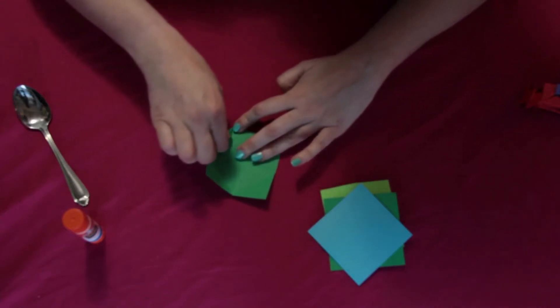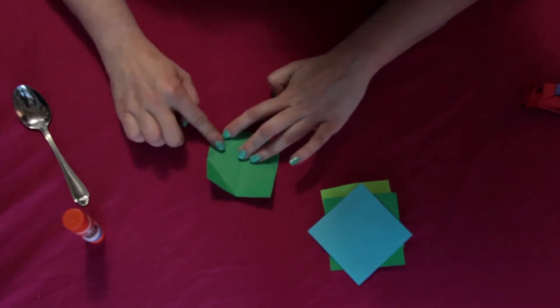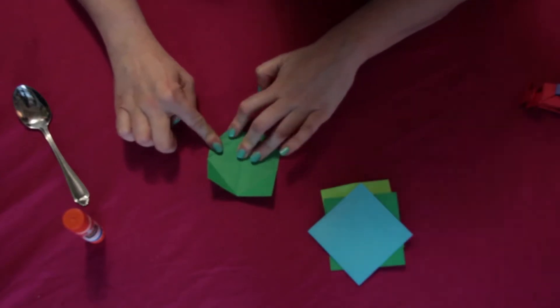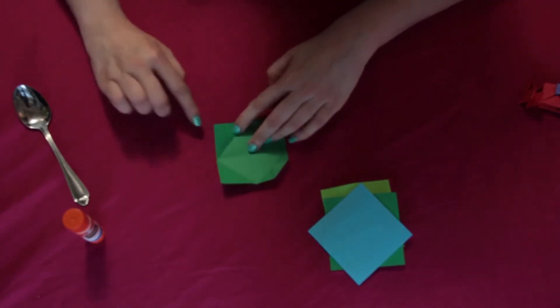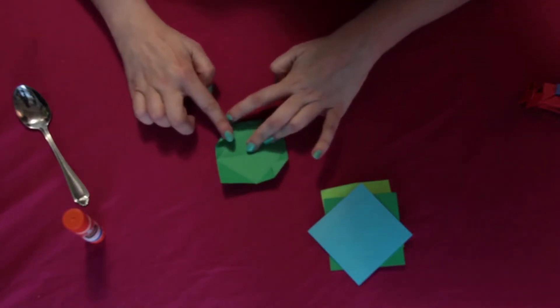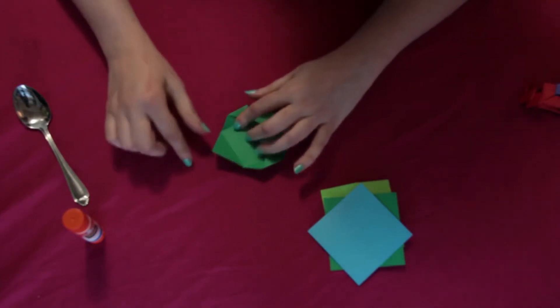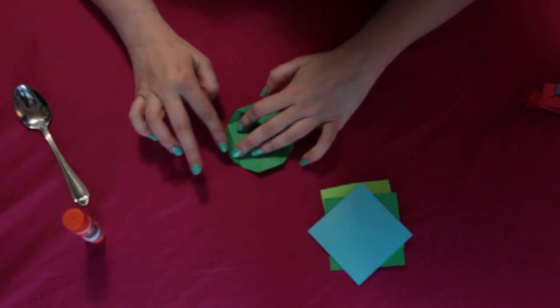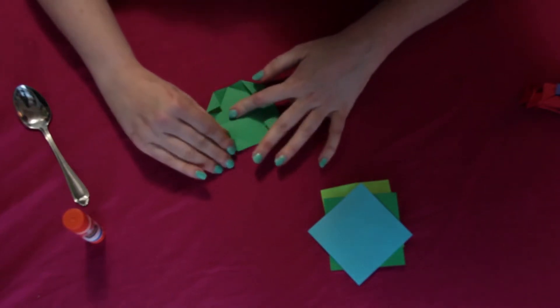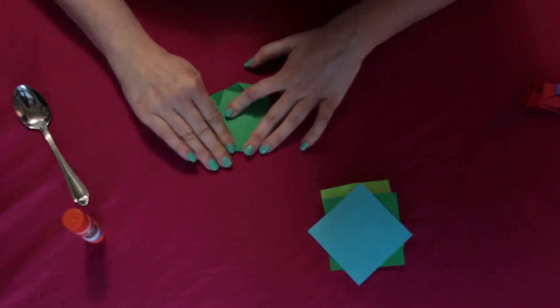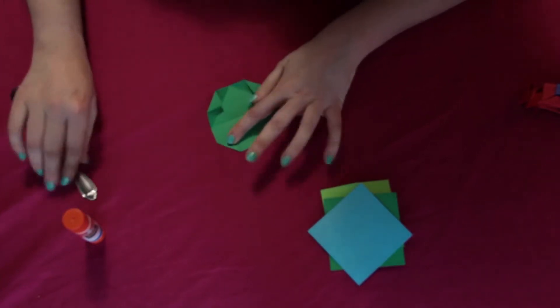You know origami looks complicated and it can be, but this one I chose because every fold you make on it is only folding something in half. So you're just folding each of these triangles in half just like that to touch those lines.